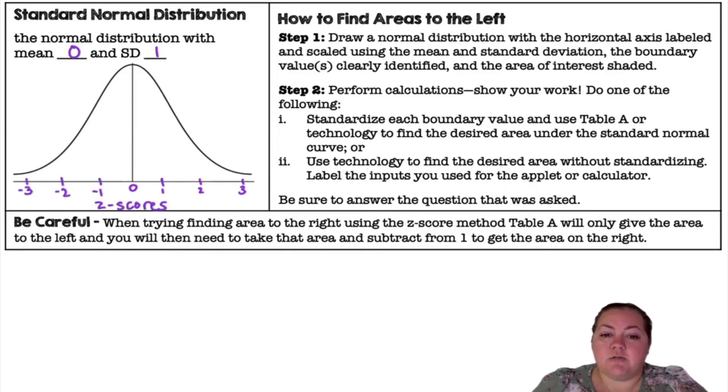So how do we find the area to the left? You draw your normal distribution with the horizontal axis labeled and scaled using the mean and the standard deviation. The boundary value or values will be clearly identified and the area of interest will be shaded. Step 2, you're going to perform your calculations and show your work. Do one of the following: you can standardize each boundary value and then use table A, or you can use technology to find the desired area under the standard normal curve.